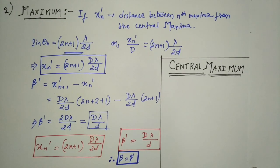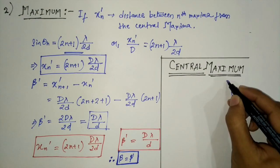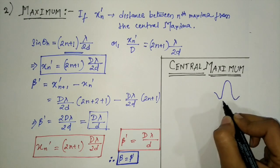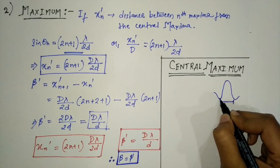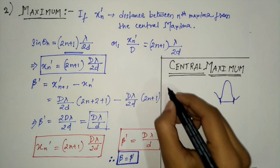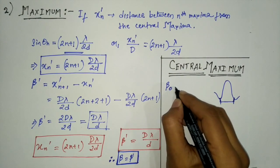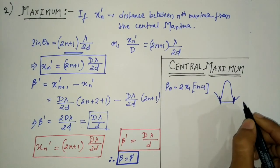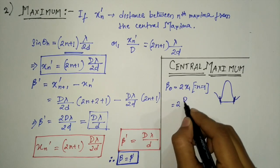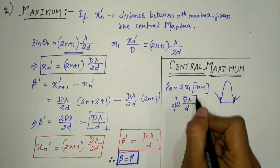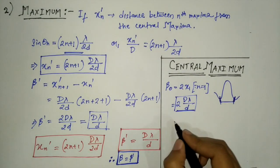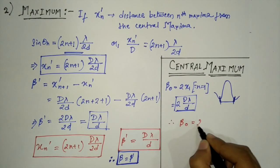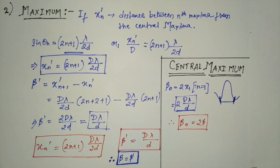Now let us consider the central maximum. We know that the central maximum extends up to the distance of the first-order minima on both sides of the center of the screen. The width of the central maximum extends up to the first secondary minimum on both sides. Therefore, if we consider the width to be β₀, then β₀ equals 2·x1 (where n=1), that is equal to 2·D·λ / d. So β₀ equals 2β — the width of the central maximum equals twice the width of the secondary minimum.